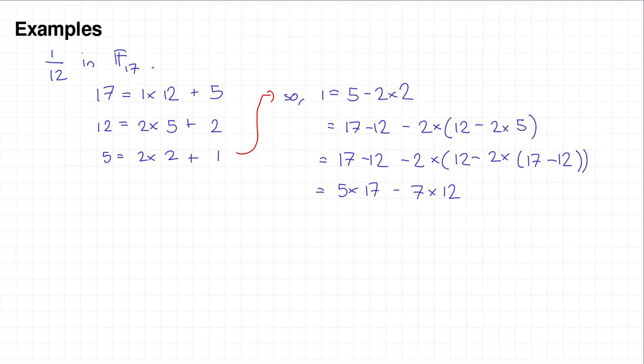So what we've got is now we've computed the inverse of 12 in F_17. And the answer would be whatever you multiplied 12 by. So the answer here is minus 7, not 7, minus 7. So our conclusion... So 1 over 12 is equal to minus 7 in F_17. And if you'd like that as a positive number, of course, you could notice that minus 7 is the same as 10 in F_17.